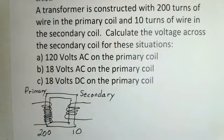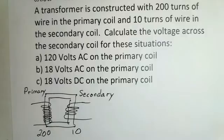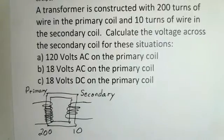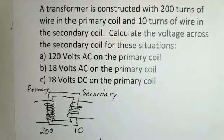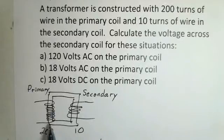So our first situation is that we're putting in 120 volts AC on the primary coil. Alternating current, the current switches direction and the current is not constant. It's continuously varying.